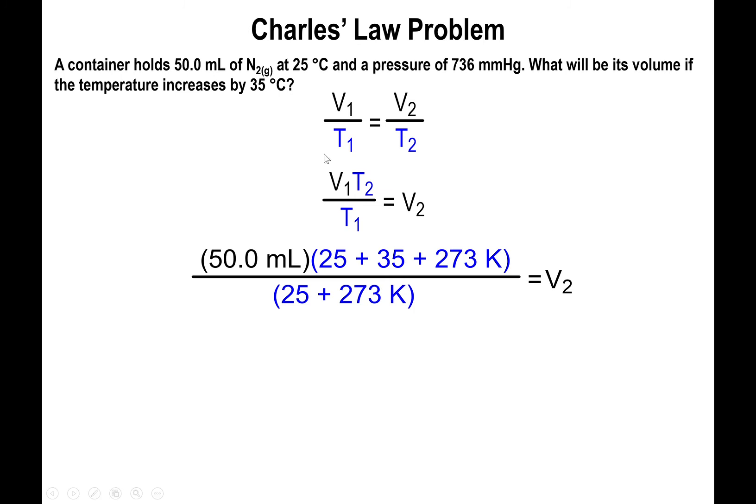V1 is 50 milliliters. T1 is 25 plus 273 Kelvin. T2 is 25 plus 35 plus 273 Kelvin. So 25 plus 35 gives you the temperature in degrees Celsius; plus 273 gives you the temperature in Kelvin. The temperatures end up being 333 Kelvin on top and 298 Kelvin on the bottom. The Kelvins cancel out, and upon carrying out the calculation, you find that the volume is now 55.9 milliliters.